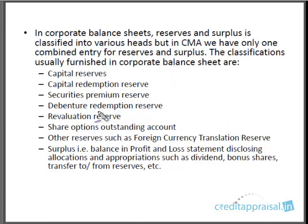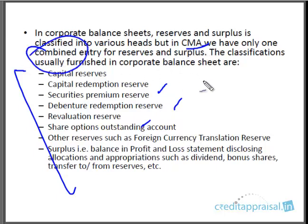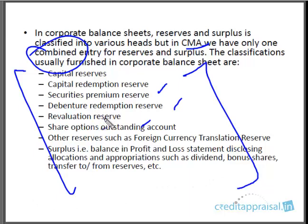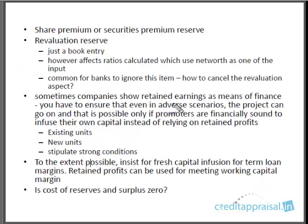In corporate balance sheets, you will find reserves under various items: capital reserve, capital redemption reserve, securities premium, debenture redemption reserve, revaluation reserve, and others. In the CMA data, there is only one combined entry for all reserves and surplus. So when you see the reserves and surplus figure in a balance sheet, put the total amount into the CMA data directly, unless there is a revaluation reserve — which requires special treatment.